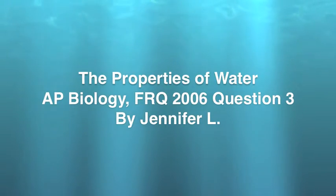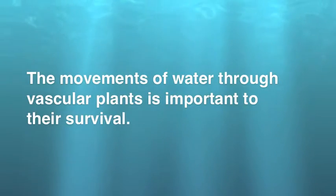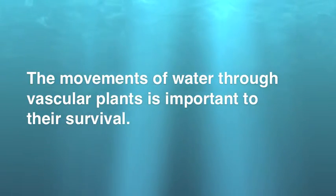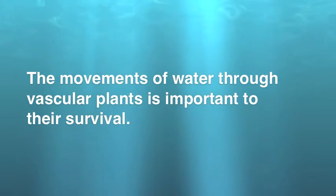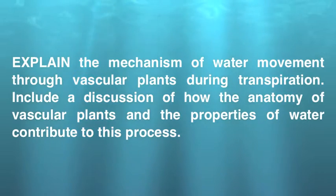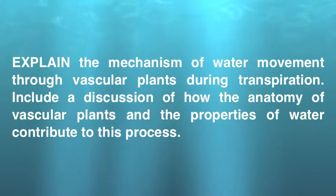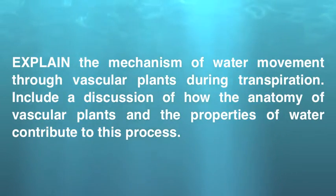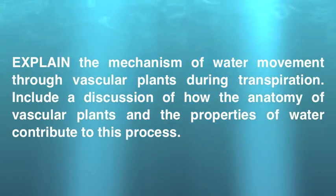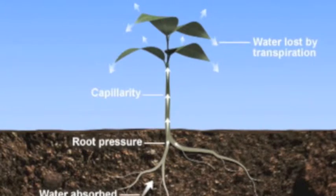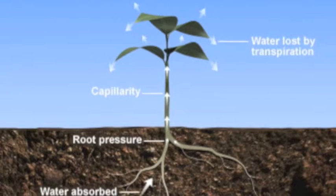This is the extra credit for the unit one test. The free response question we're going to solve today states that the movement of water through vascular plants is important for their survival. The first part of this question is to explain the mechanism of water movement through vascular plants during transpiration, including a discussion of how the anatomy of vascular plants and the properties of water contribute to this process. Here is a diagram of transpiration.